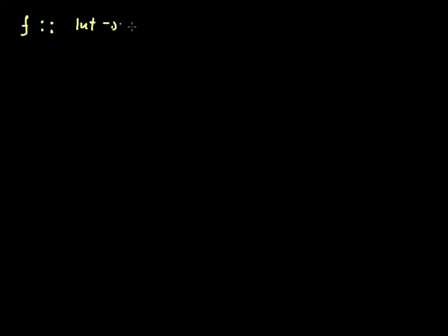We're going to look at the list monad in this video. The introduction for all monads I've done in my previous videos. What I'm going to do right now is just get into the gist of the list monad. I have a function f that simply goes from an int to an int, making a very specific case here to give you the intuition of what is going to happen as we proceed with our list monad. And I've got a function g here that goes from an integer to an integer.